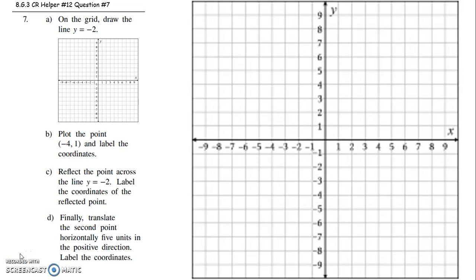All right, 8th graders, this is to help you with question 7 on CR12. It says, on the grid, draw the line y equals negative 2. Okay, to know what the line y equals negative 2 will look like, you could always just plot some points on that line.